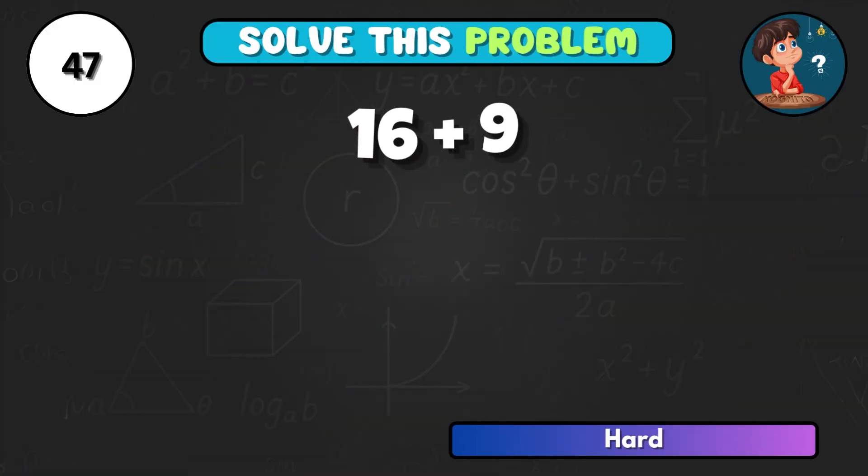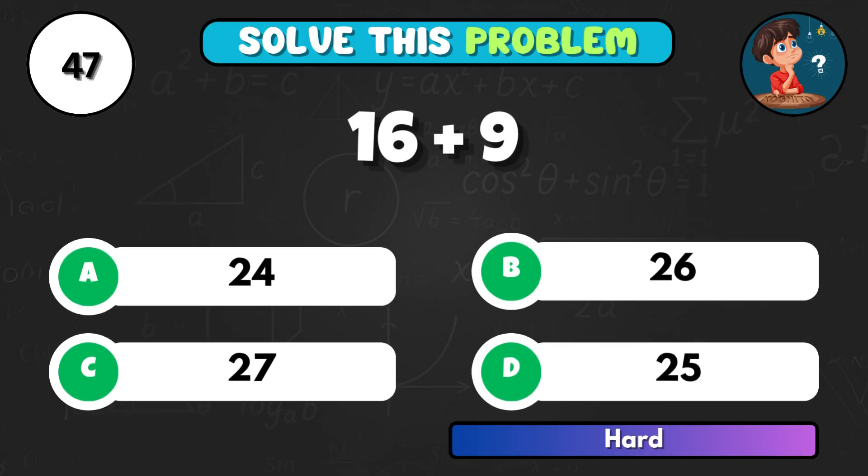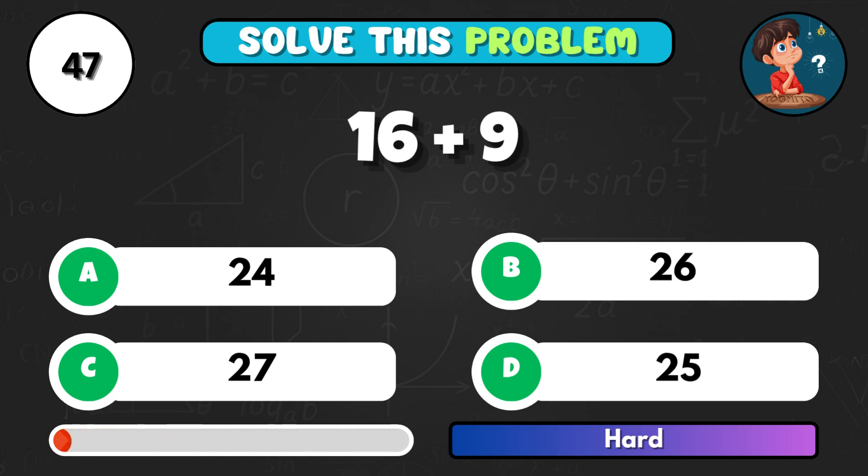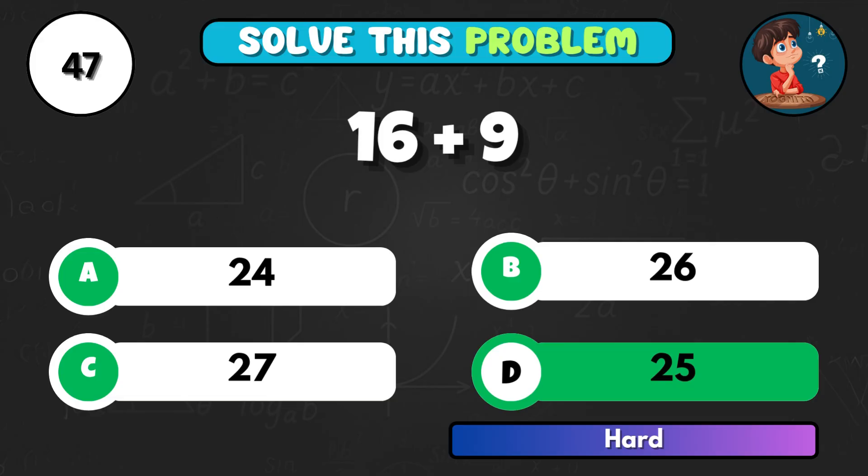16 plus 9, what's next? Option D, total is 25.